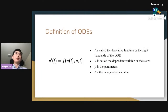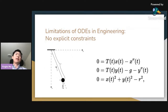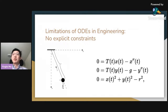Speaking of modeling, the most common formulation is ordinary differential equations, where the derivative of the state is simply equal to a possibly non-linear relation between the state, parameters, and time. But there are several drawbacks of ODEs in the context of engineering. For instance, if we want to simulate circuits, we want to express Kirchhoff's current law and Kirchhoff's voltage law — but those are not differential equations. Another limitation is in multibody dynamics, when we have constraints on the length of a component, we cannot express that in ODEs easily.